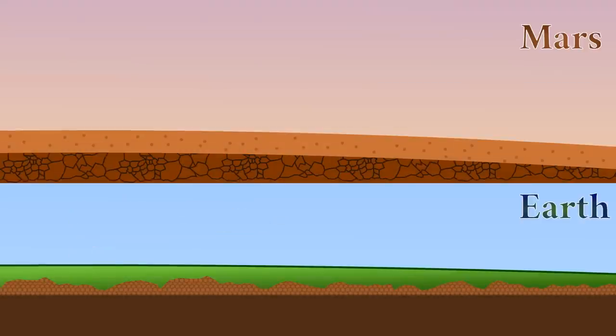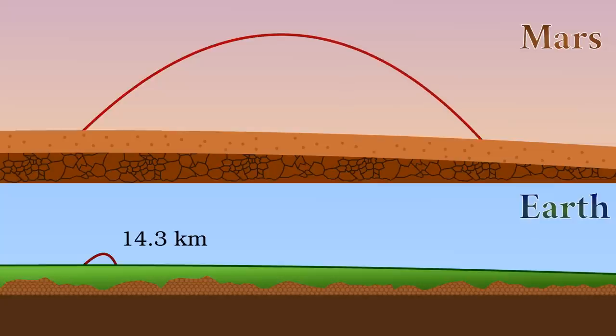On Earth, drag has drastically shortened the maximum range to just under 14.5km. On Mars, it has made very little difference. The maximum range is 176km. The combination of weaker gravity and thinner atmosphere lead to a 12-fold greater range on Mars.